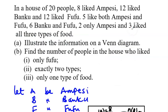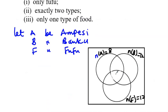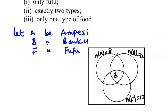From the question, 3 like all three types. One important thing about Venn diagrams is you first fill in the intersection of all three sets, so place 3 in the centre. Then, 5 like both Ampesi and Fufu. Since this covers the entire Ampesi-Fufu overlap including the centre, we subtract 3 from 5 to get those who like Ampesi and Fufu only, which gives 2.